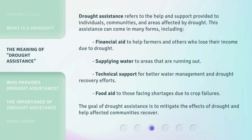Drought assistance refers to the help and support provided to individuals, communities, and areas affected by drought. This assistance can come in many forms, including: financial aid to help farmers and others who lose their income due to drought; supplying water to areas that are running out; technical support for better water management and drought recovery efforts; and food aid to those facing shortages due to crop failures. The goal of drought assistance is to mitigate the effects of drought and help affected communities recover.